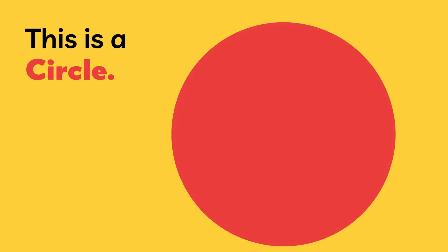This is a circle. The outer surface of a circle is called the circumference. The middle part of a circle is called the center.